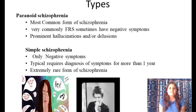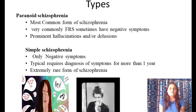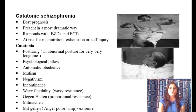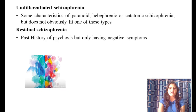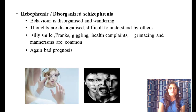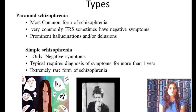Regarding the various types of schizophrenia: although newer DSM and ICD classifications have removed these subtypes, you should know them as they may still appear in exams. The types are: paranoid, simple, hebephrenic/disorganized, catatonic, undifferentiated, and residual schizophrenia.